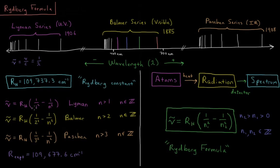Lyman discovered a similar thing in the UV. It was a constant times 1 over 1 squared, minus 1 over n squared, where n is greater than 2.